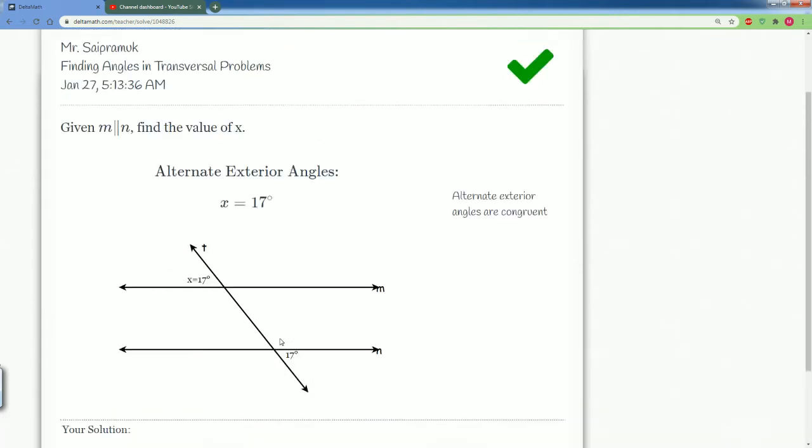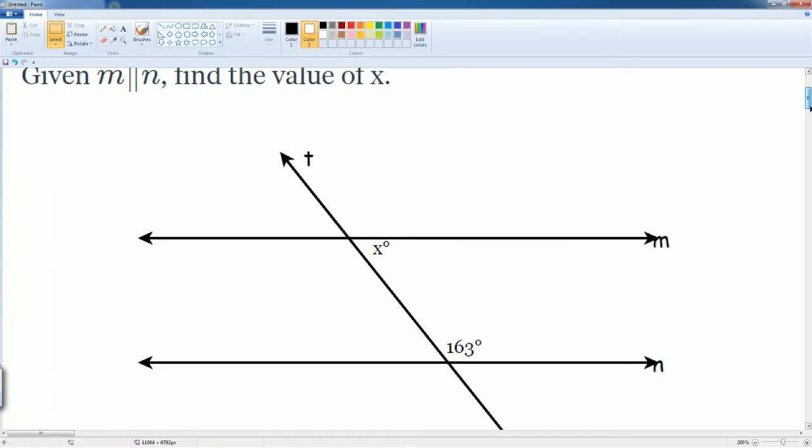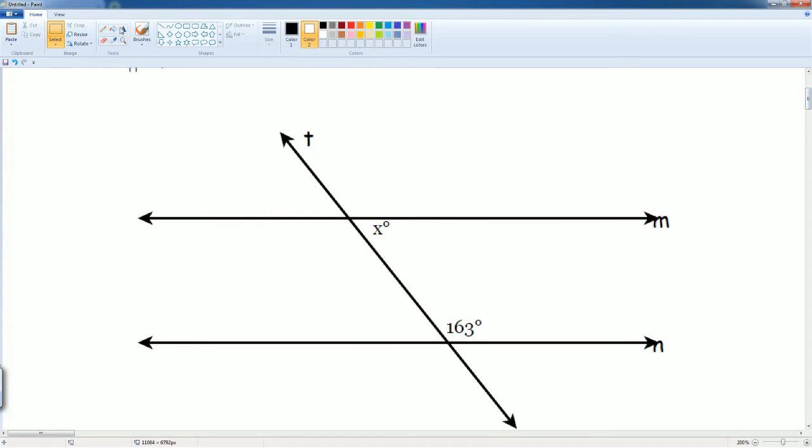Next it says, given that m is parallel to n, you're going to find the value of X for this image. We have to see how these two angles are related. So what I'm going to do is grab the angle X, which is this angle, and I'm gonna slide it down by the transformation of translation.